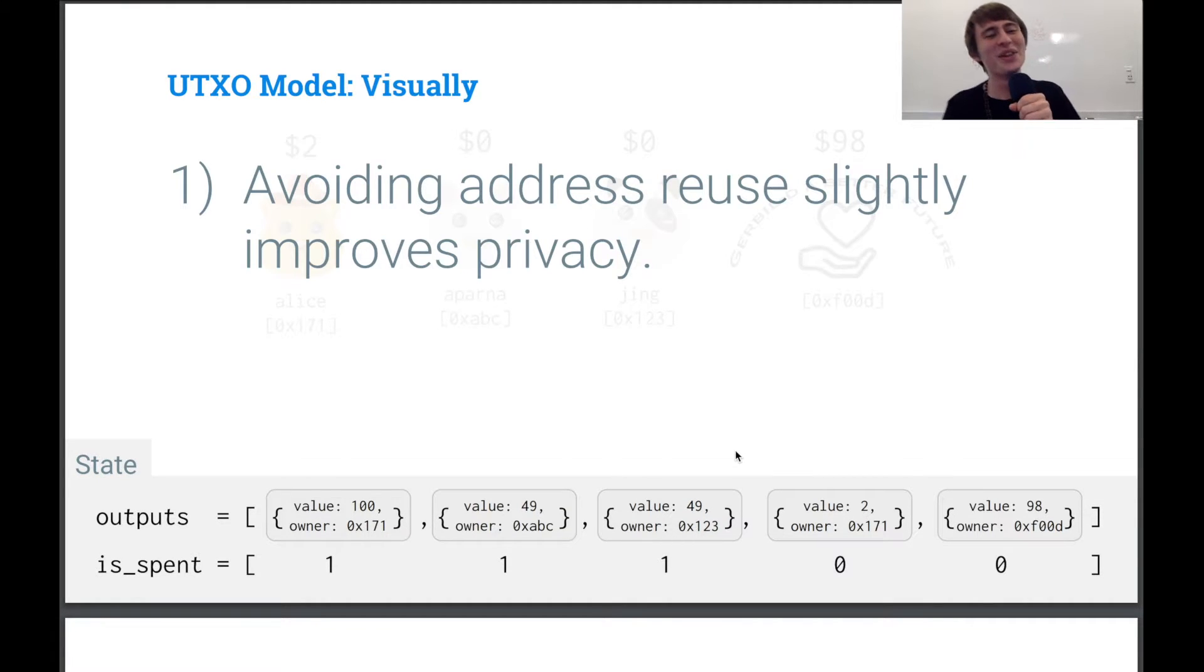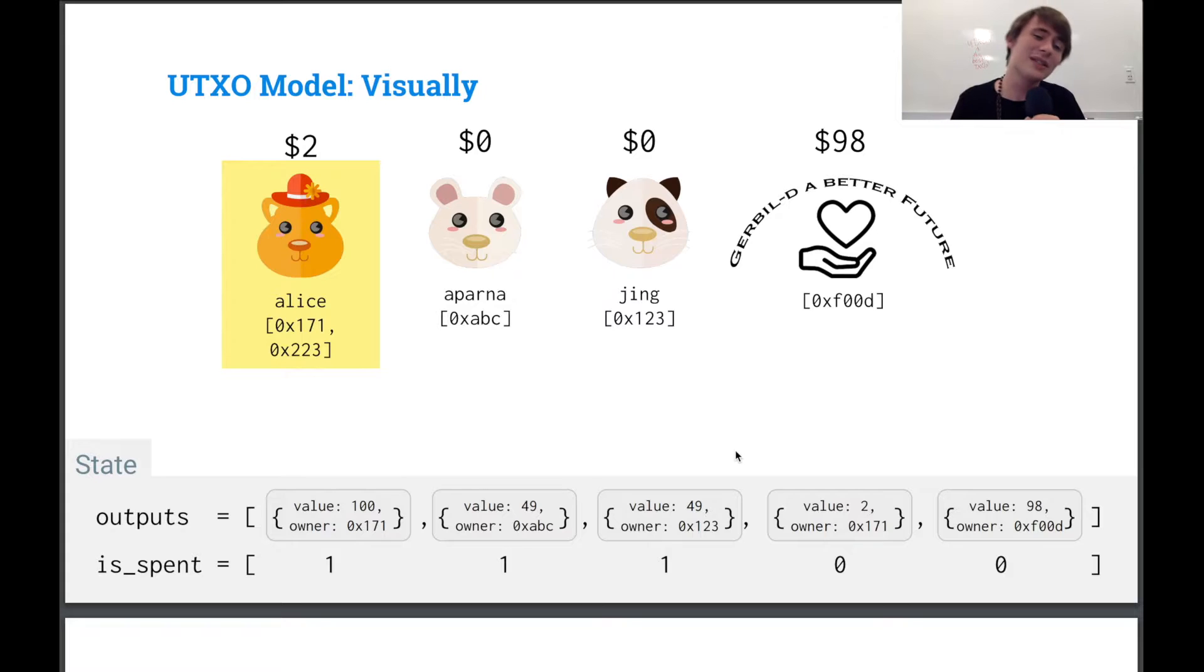So anyway, now a couple little notes. Avoiding address reuse slightly improves privacy. And so what we can do is we can say, okay, Alice, instead of just having one address, she has two addresses that she controls. She has both of those private keys. And instead of sending to her same address, we change the second UTXO to reference her second address. And so this is how we can kind of somewhat obfuscate who has what money.